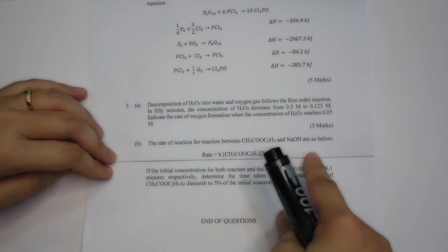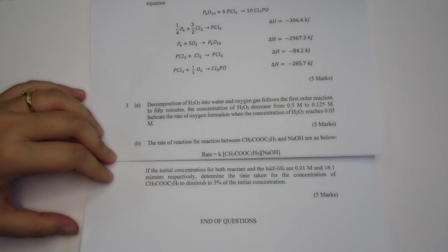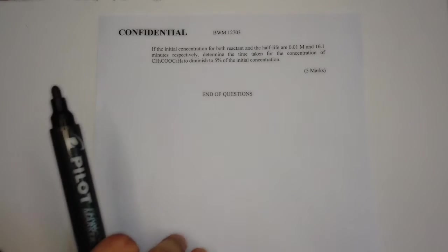Given to you is the rate of reaction. If the initial concentration for both reactants and the half-life are 0.01 molar and 16.1 minutes respectively, determine the time taken for the concentration to diminish to 5% of the initial concentration.